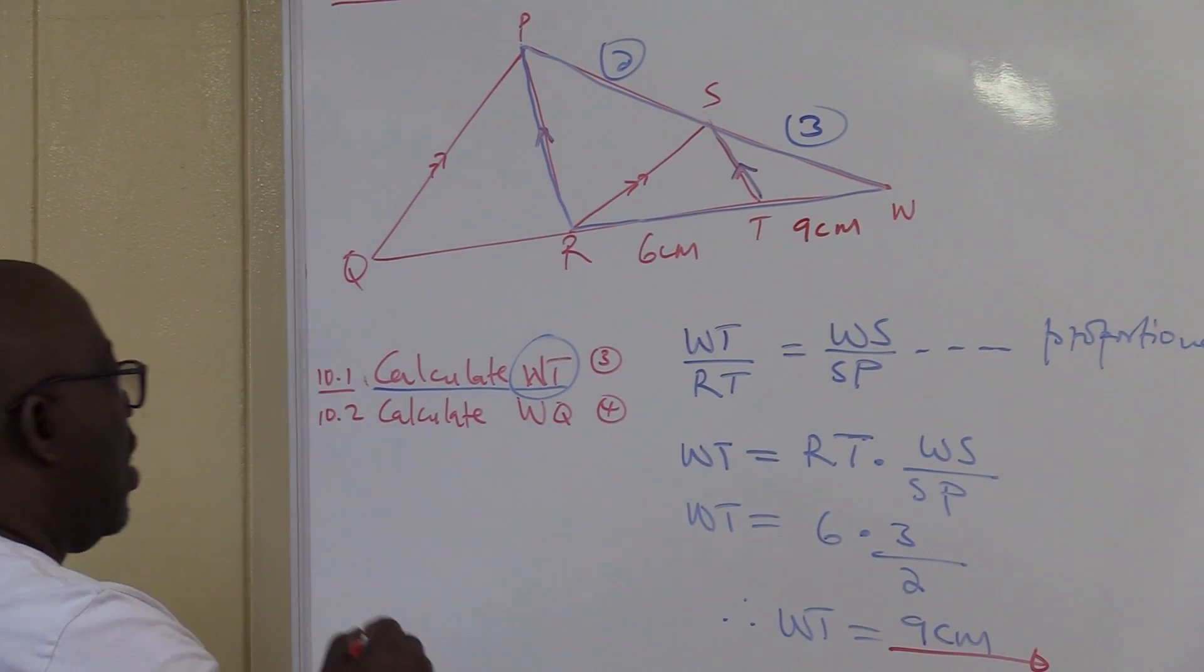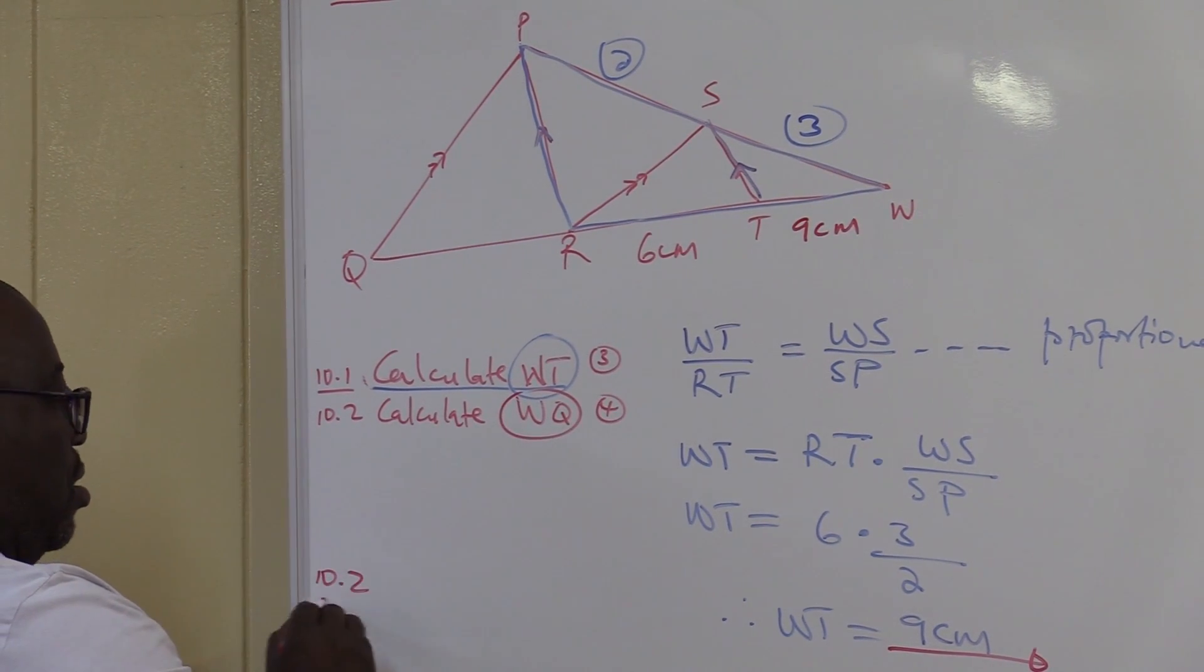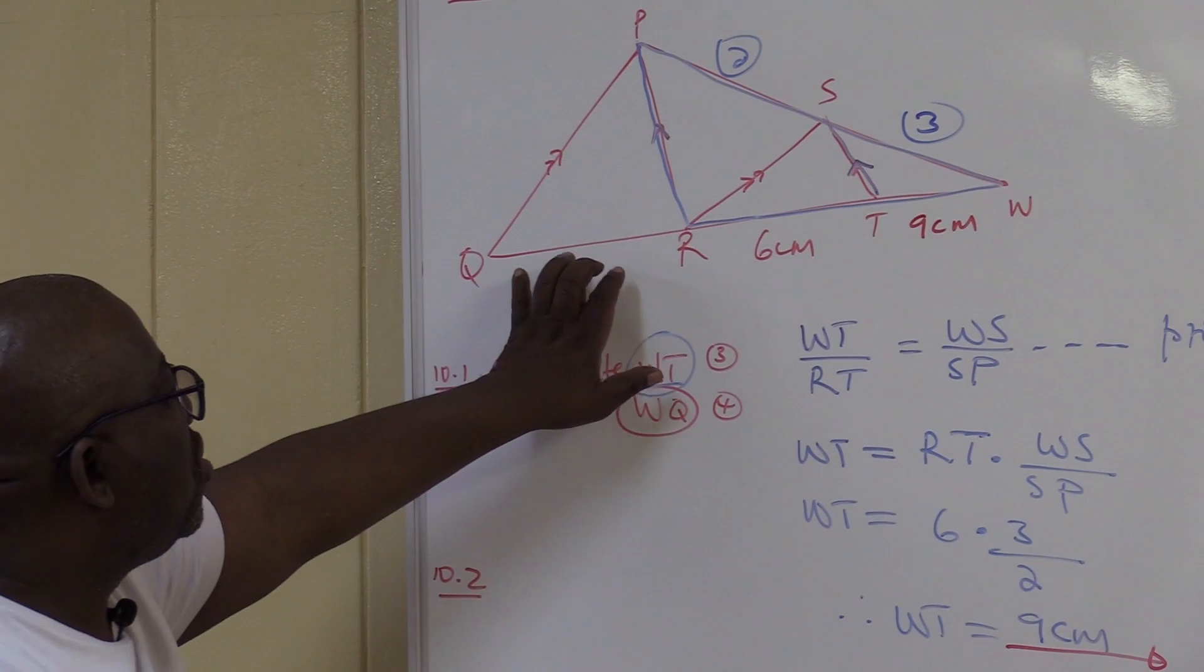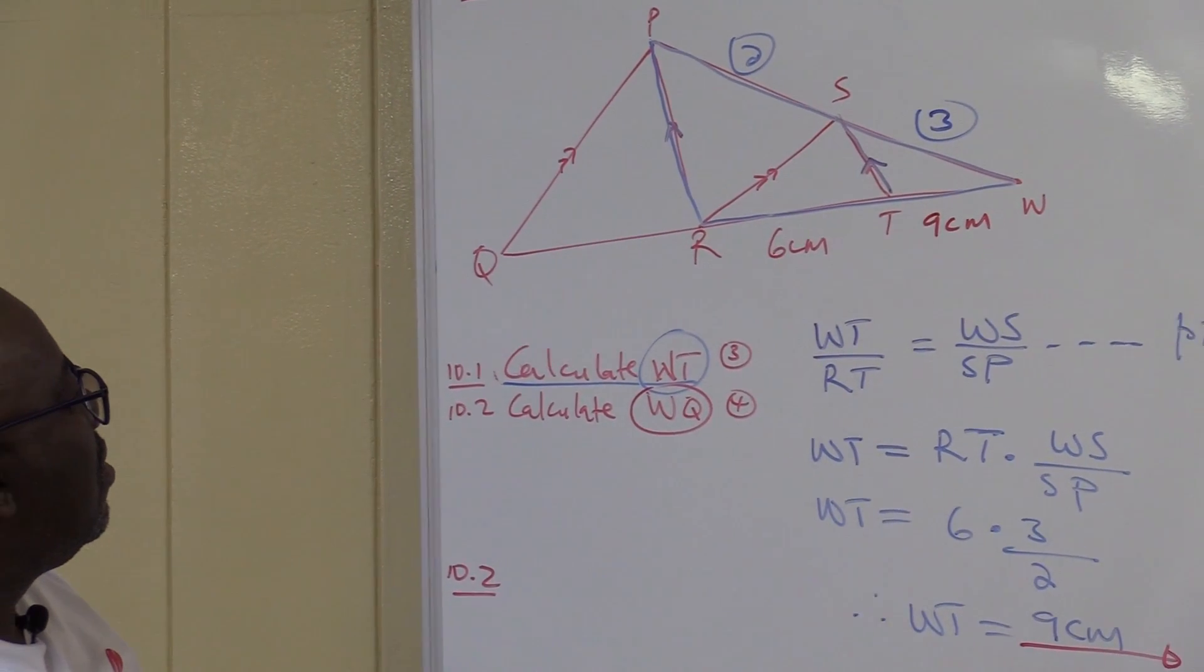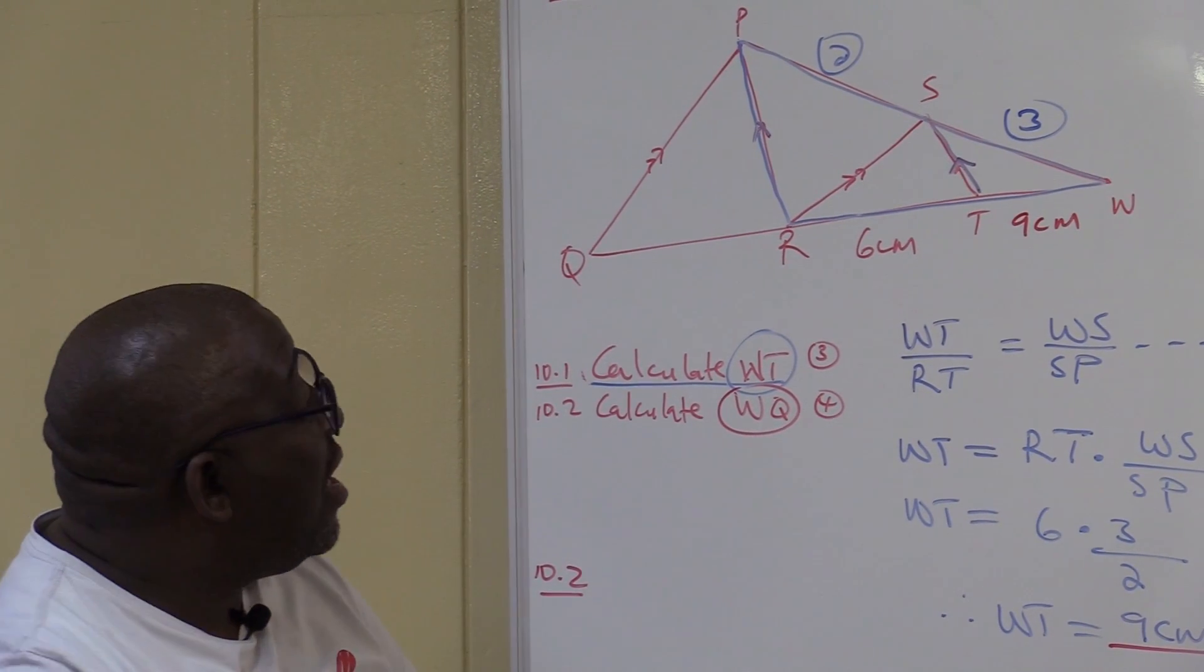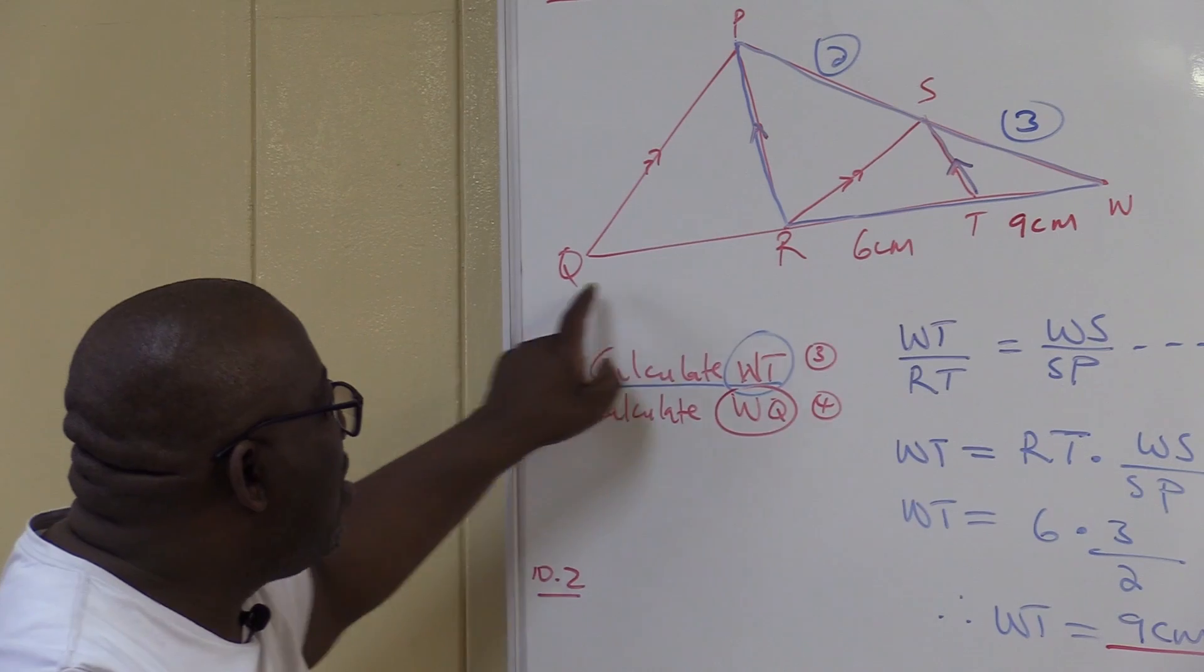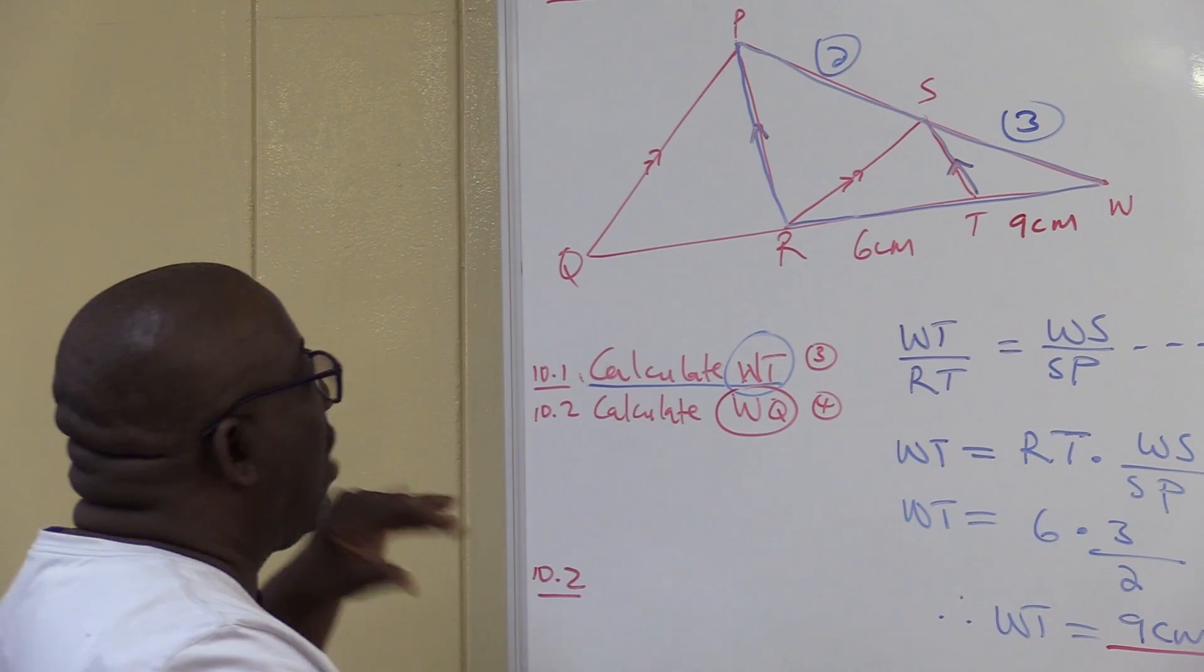Number 2. Calculate WQ. We're looking for WQ now. Where is WQ? Oh, this whole distance. In other words, we're short of this one. Let me look at it. I'm trying to look at the triangle that we're going to use. WQ, this whole distance. This is 9, this is 6, 15. We're short of this one.